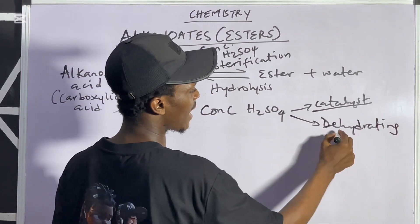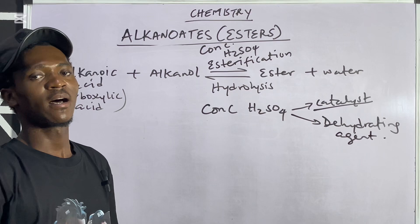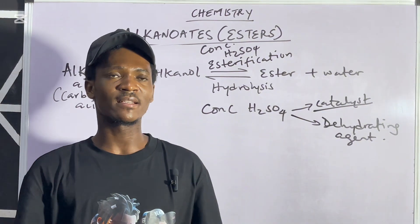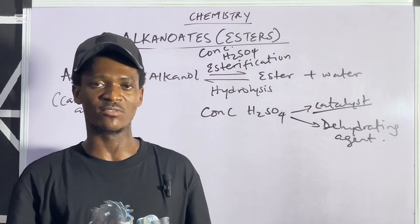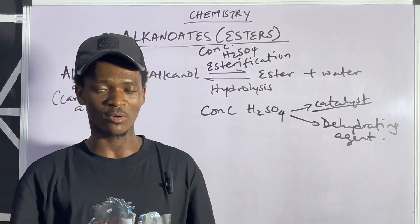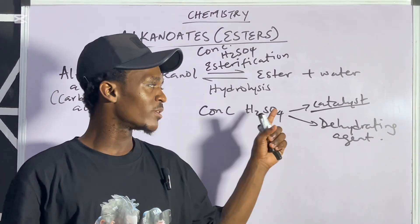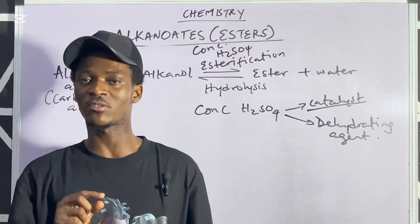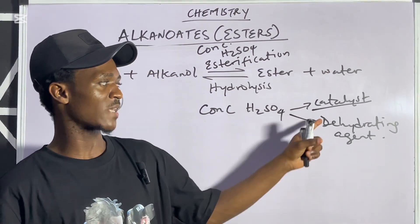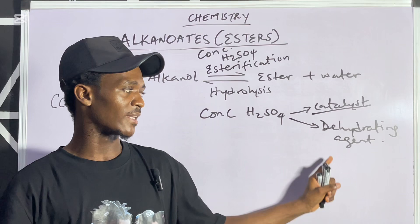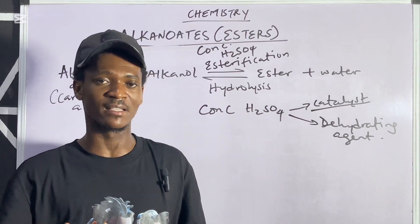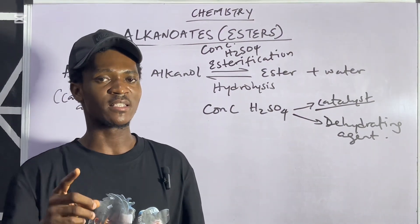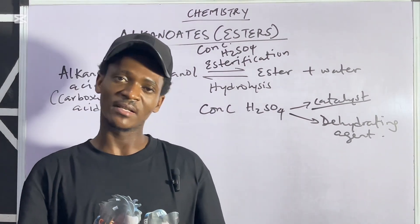There was a time a question like this was asked in JAMB: concentrated sulfuric acid during an esterification reaction functions as — and there were options with 'catalyst' and 'dehydrating agent.' The best answer is that primarily, concentrated sulfuric acid during esterification functions as a catalyst. When you see catalyst as one option and dehydrating agent as another, it is preferable to go with catalyst.